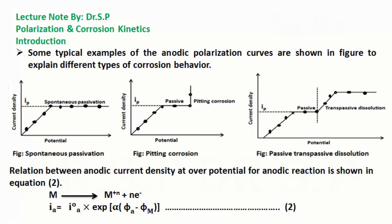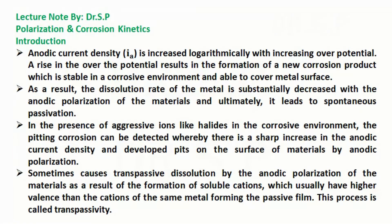The relation between anodic current density and overpotential for the anodic reaction is shown in Equation 2. Anodic current density is increased logarithmically with increasing overpotential.